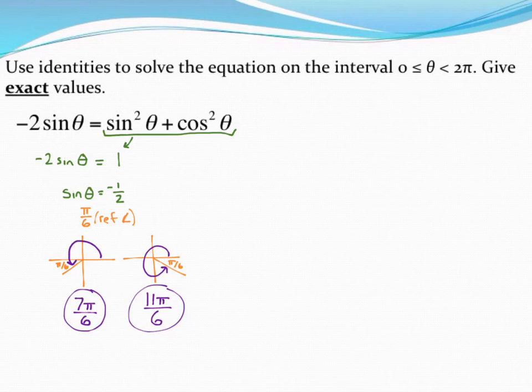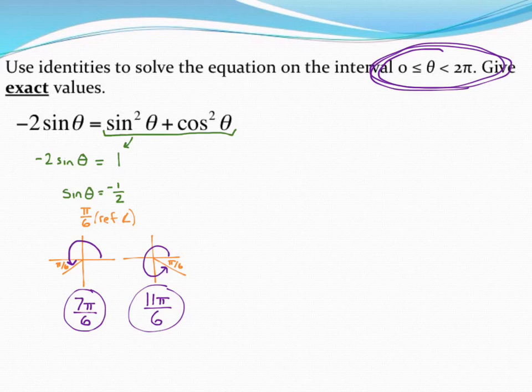And remember, there's probably an infinite number of solutions, but we're only looking at this interval, only solutions that are between zero and two pi. So these are the only two solutions that would fit in that interval.